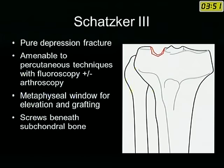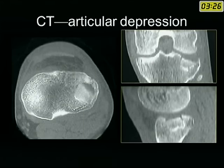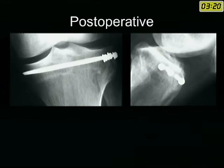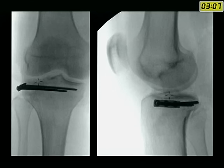Schatzker type 3 is a pure depression and can be treated with a percutaneous technique using fluoroscopy or an open technique using a metaphyseal window, elevation, and bone grafting. Whatever technique you use, you need to elevate the depressed articular surface and supplement it with a subcondylar screw. CT scan shows the articular depression much better than X-ray.